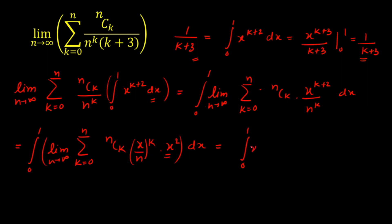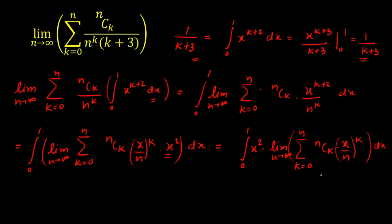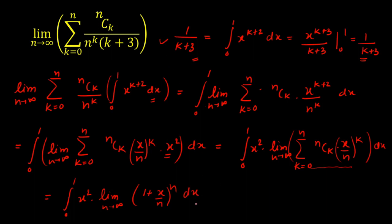This gives: integral from 0 to 1 of x^2 times limit n→∞ of summation k=0 to n of nCk times (x/n)^k, dx. As you can see, this is a perfect expansion — nCk times (x/n)^k is the binomial expansion of (1 + x/n)^n. So this compresses to: integral from 0 to 1 of x^2 times limit n→∞ of (1 + x/n)^n dx. That's why I wrote 1/(k+3) as the integral — that's the key catch.